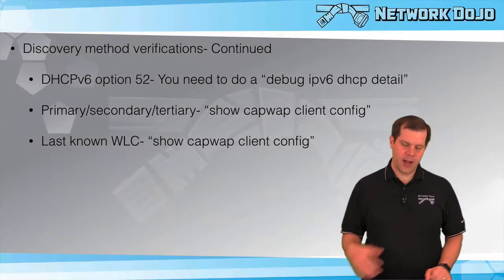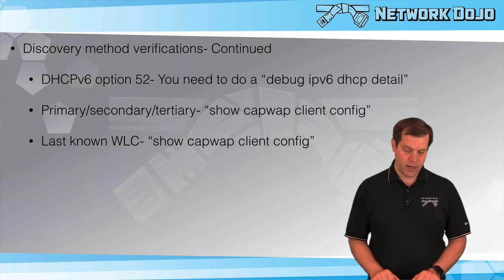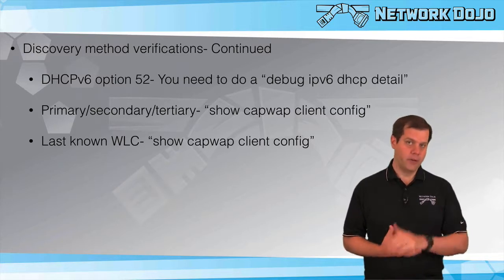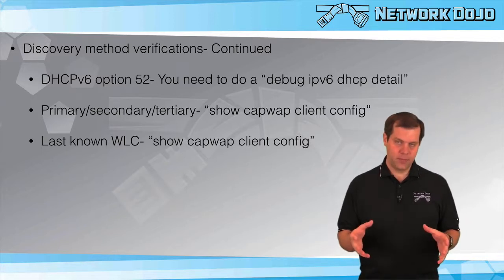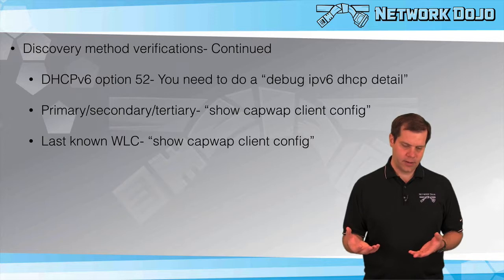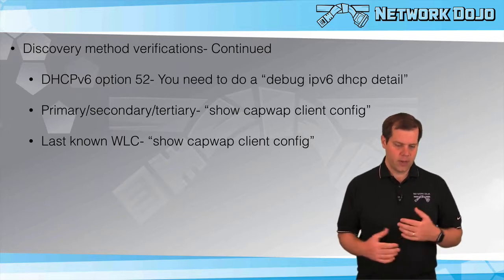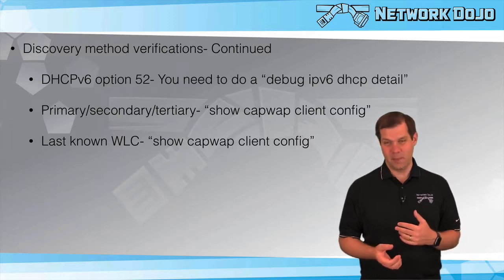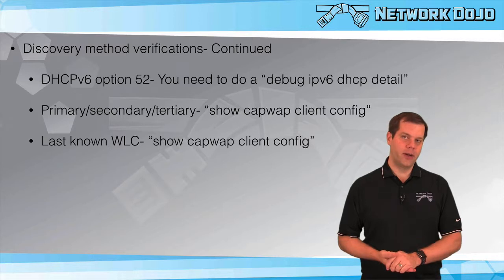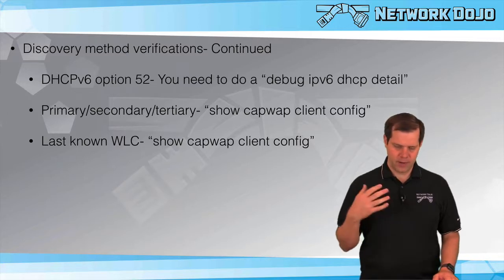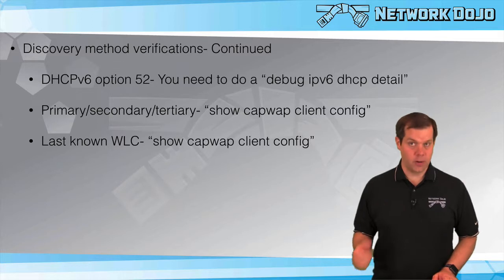Those are all of our different discovery methods and how to validate if they're actually working — and then you should be able to figure out how to fix whatever config issue is causing problems. At this point, if discovery methods are configured but you're still not seeing your AP attempting to join the controller, maybe there's a Layer 3 issue: we know where to send the request, but it can't get there or can't get back. So if you know the methods are good but the AP still isn't trying to join, look for ACLs on the wired network, routing issues, default gateways — anything that would explain why the request isn't reaching the controller or the response isn't coming back.